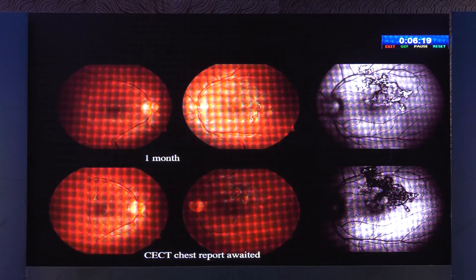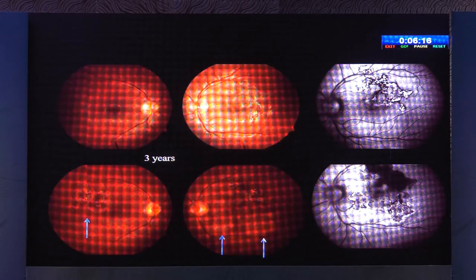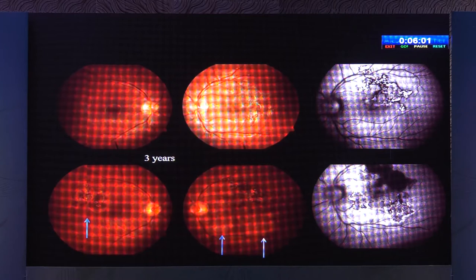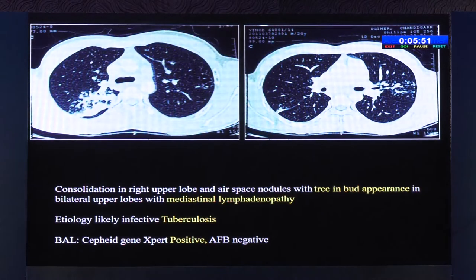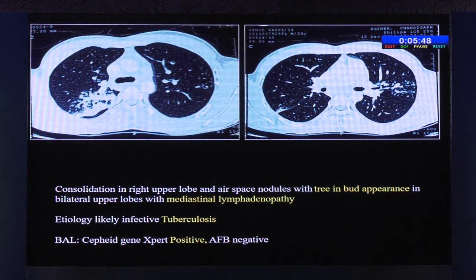The patient was lost to follow-up, probably taking steroids intermittently. He turned up three years later. His fellow right eye, which was not involved earlier, now showed extensive scarring, suggesting disease developed during those three years. The previous left eye scar had new active lesions elsewhere — bilateral serpiginous choroiditis at three years. CT scan done at this stage showed very clear evidence of TB — tree-in-bud appearance with bilateral mediastinal lymphadenopathy — and bronchial alveolar lavage tested positive on GeneXpert.